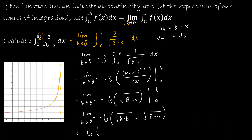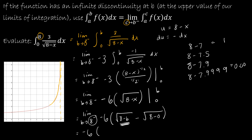Now let's actually evaluate the limit. I've got negative 6 on the outside. As B approaches 8 from the left-hand side — thinking about 8 minus 7, 8 minus 7.5, 8 minus 7.9, 8 minus 7.9999 — what's going on as we get closer and closer to 8 from the left? This expression is getting closer and closer to 0. So I've got negative 6 times (0 minus the square root of 8), which is negative 6 times negative radical 8, giving positive 6 radical 8.